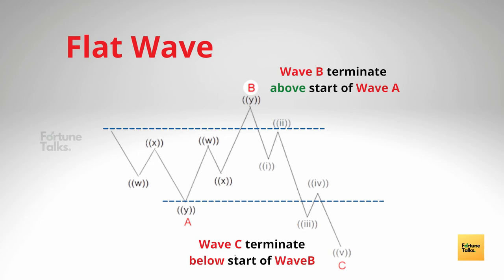Most flats usually don't look clear as there are variations on their structure. If you observe, a flat may have wave B terminate beyond the beginning of wave A, and the C wave may terminate beyond the start of wave B. This type of flat is known as an expanded flat, and expanded flats are more common in markets compared to normal flats.